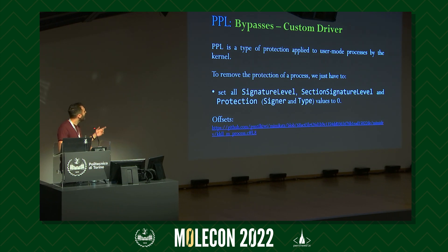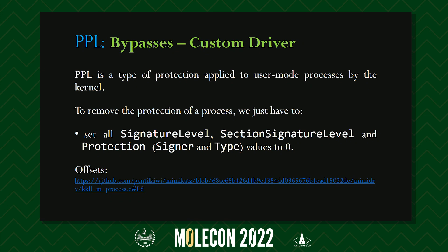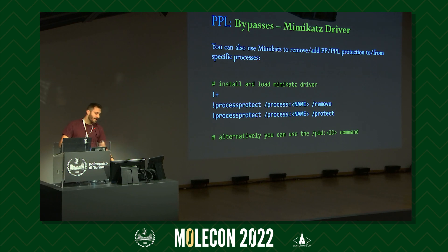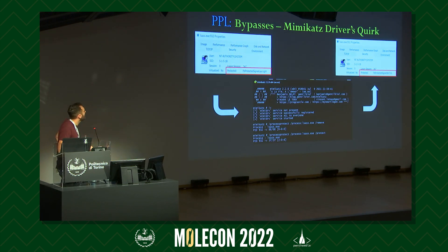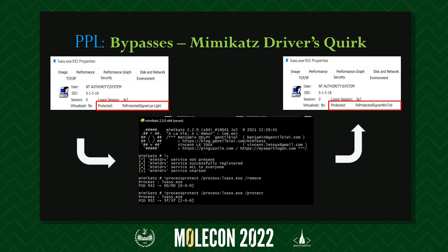Since the EPROCESS structure changes between every major Windows build, I've listed a link where you can gather offsets for this structure. One possible bypass, instead of writing your own driver, is to use Mimikatz's built-in commands to upgrade or remove protection from a process. Note that Mimikatz doesn't restore the original protection level of a process, so during an attack you should instead upgrade the Mimikatz process protection level before dumping credentials.